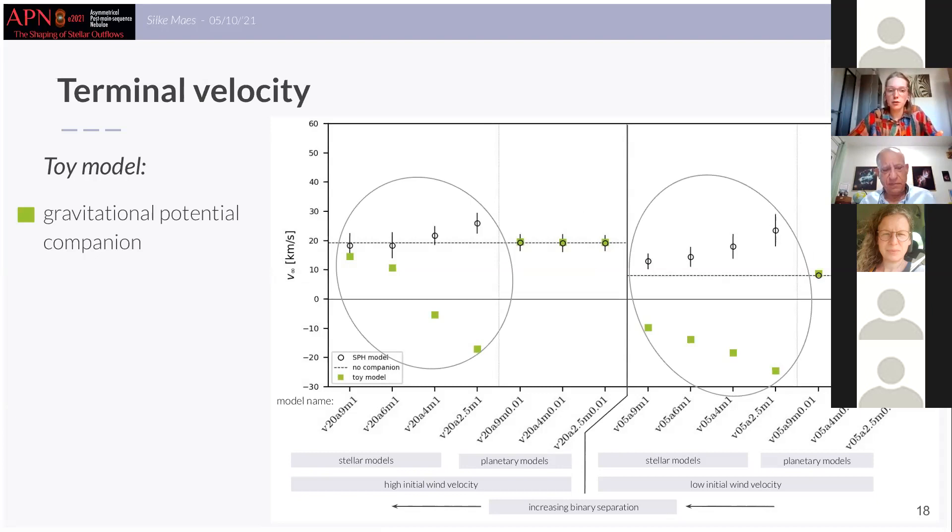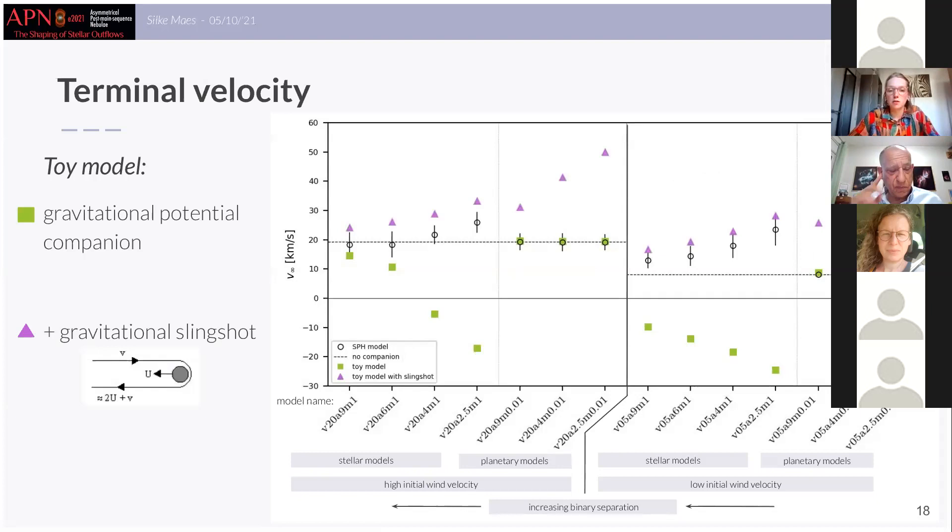One minute. Okay, thank you. Therefore we included another mechanism to our toy model, namely the slingshot mechanism. So this states that by conservation of energy and momentum, a small object moving past a large body in motion is accelerated or decelerated. And if we also include the slingshot in our toy model, this gives the results in purple and you can see that this can explain the terminal velocities of our models with a stellar companion and it's even necessary to get the terminal velocities.